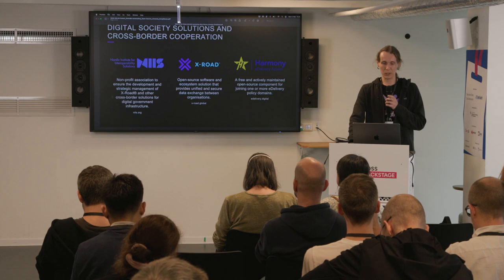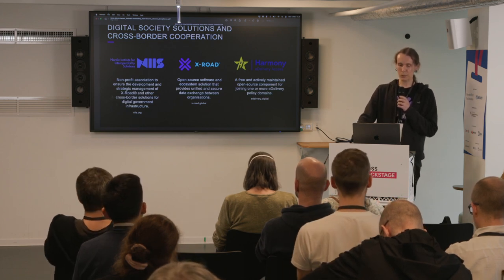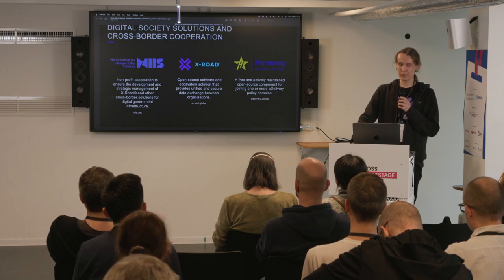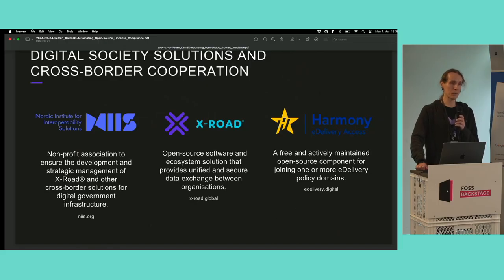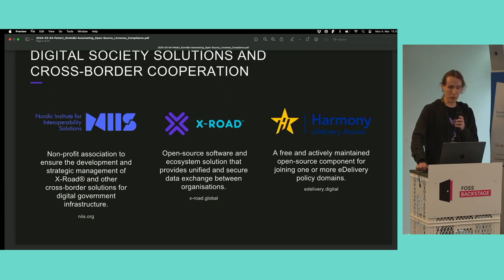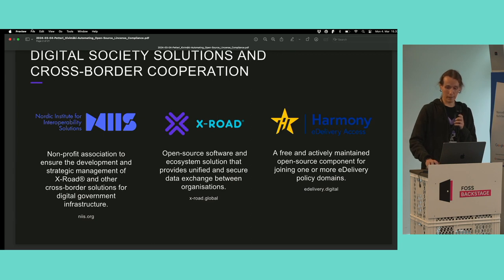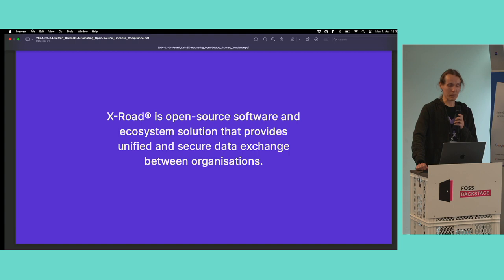Before diving into the actual topic, first a little bit of background. NIIS is a non-profit association whose mission is to develop digital government solutions for its members. Our members are Estonia, Finland, and Iceland. So we are developing open source software for European governments. Our main products are XROAD and Harmony eDelivery Access — both solutions for secure data exchange. I'm going to use XROAD as an example of how to automate open source license compliance.